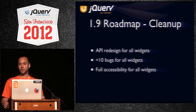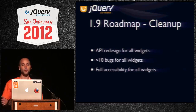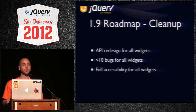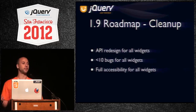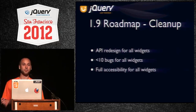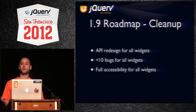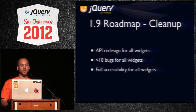We were looking at cleanup and going to do an API redesign of all our widgets. The new widgets in 1.8 were nice — they were easy to work with, they only had like three or four options, they were very extensible, they had events that you could hook into to change the behavior. Some of the older widgets had upwards of 20 or 30 options and were pretty unwieldy. So we were going to go back, redesign all the APIs, refactor everything, clean up all the bugs, and make sure we had less than 10 bugs for every single component. We were also going to go through and add full accessibility — proper keyboard handling and proper ARIA attributes — which is pretty time consuming.